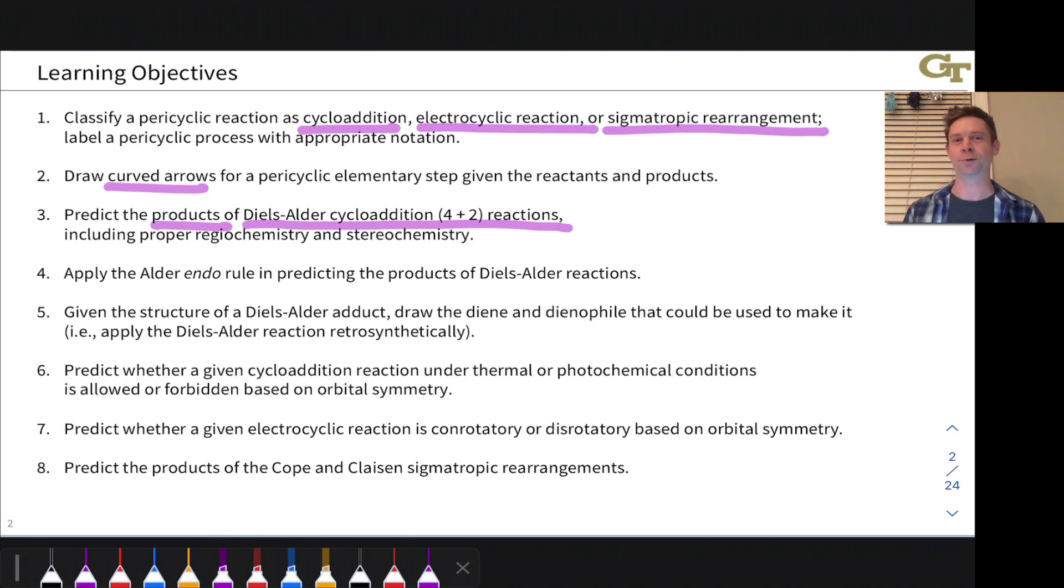Along with their proper stereochemistry, proper configurations at newly created stereocenters. This reaction can create a lot of stereocenters in one pot, which is one reason it's very commonly used. We will apply the Alder endo rule, which is a rule related to the stereochemistry of Diels-Alder reactions. Then we will apply the Diels-Alder reaction in synthesis and retrosynthesis, working backwards from a target to a set of reactants that could be used to prepare that target via a Diels-Alder reaction—really our first big taste of retrosynthesis.